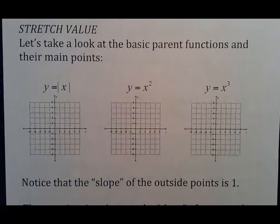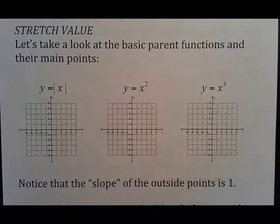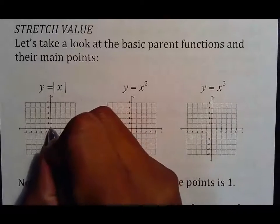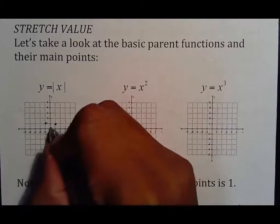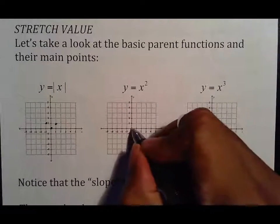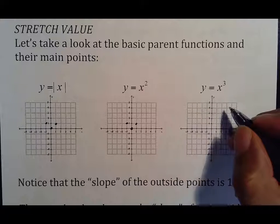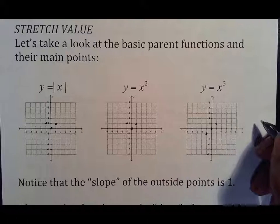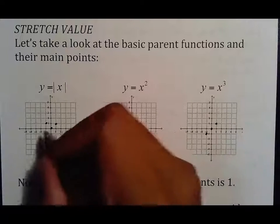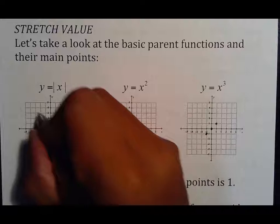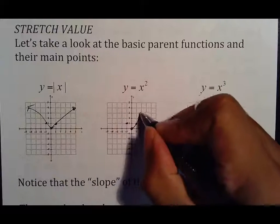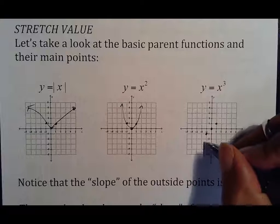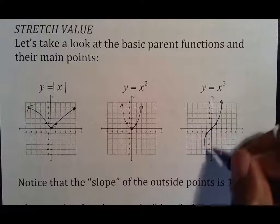Your stretch value is important to know kind of how the general sketch works. If you take a look at the general basic points, that was my basic points for |x|, basic points for x squared, basic points for x to the third. As I graph those, that would be a V, this was a parabola, and this was an upwards S.